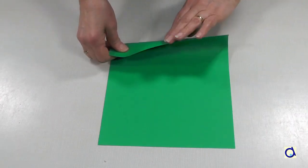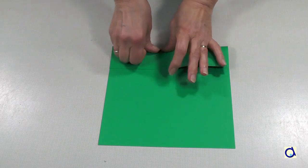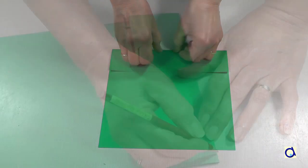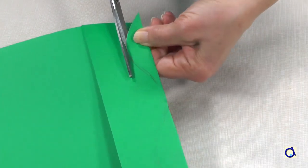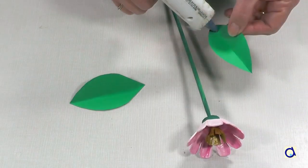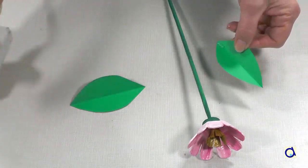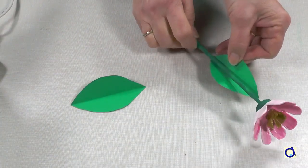Take a sheet of green paper and fold one part in half. Draw two half leaves. Cut all the leaves. Put a dot of hot glue at the base of each leaf and attach them to either side of the stem.